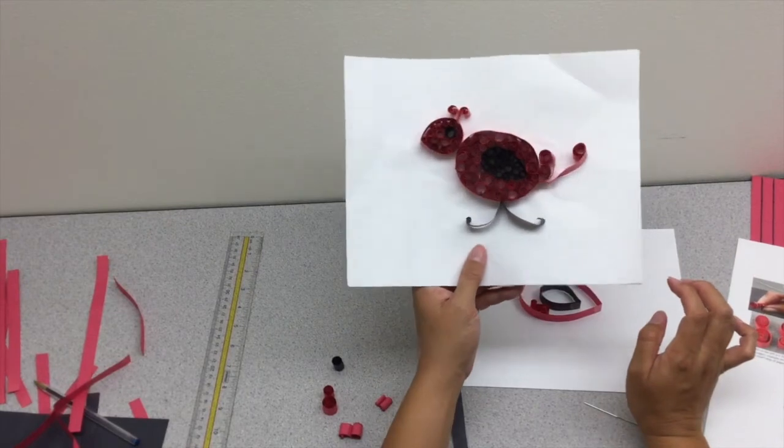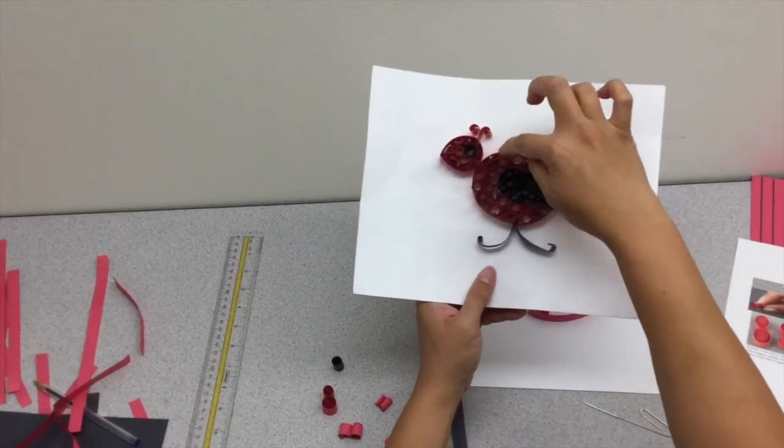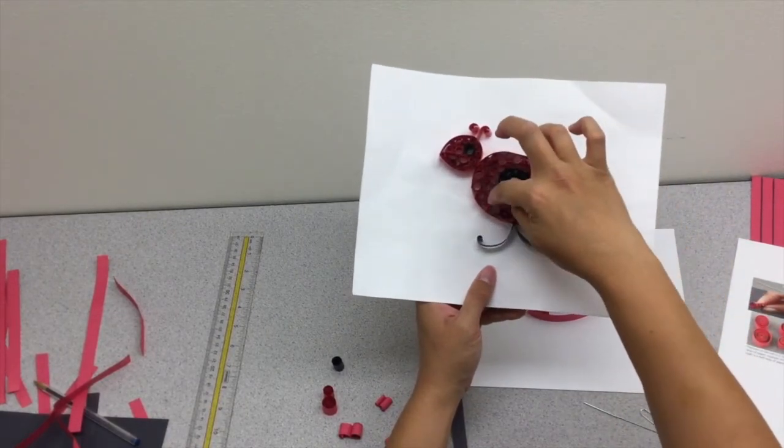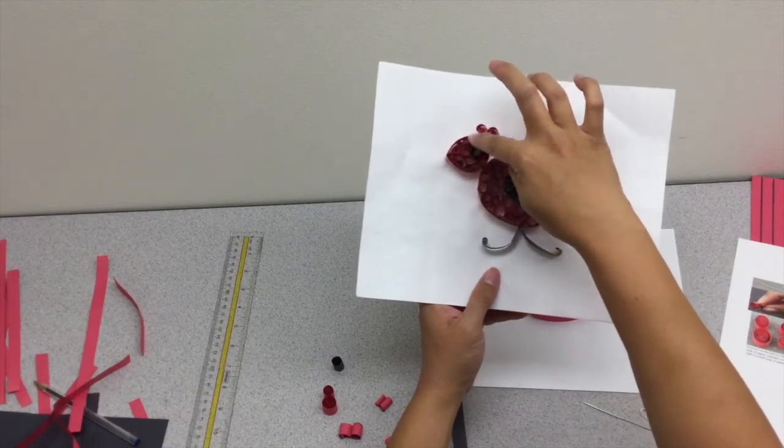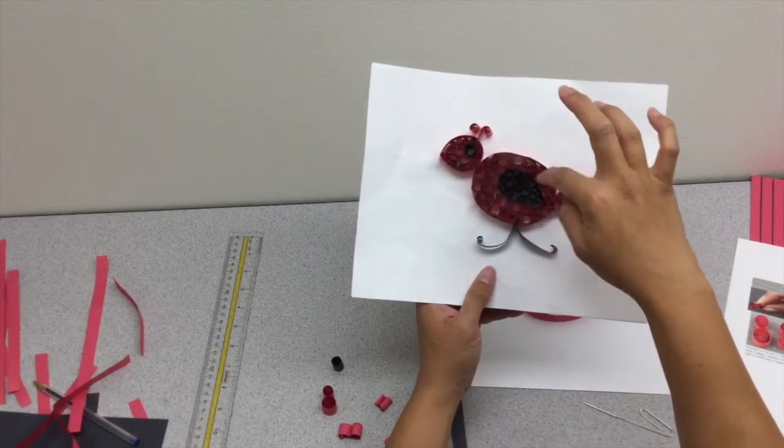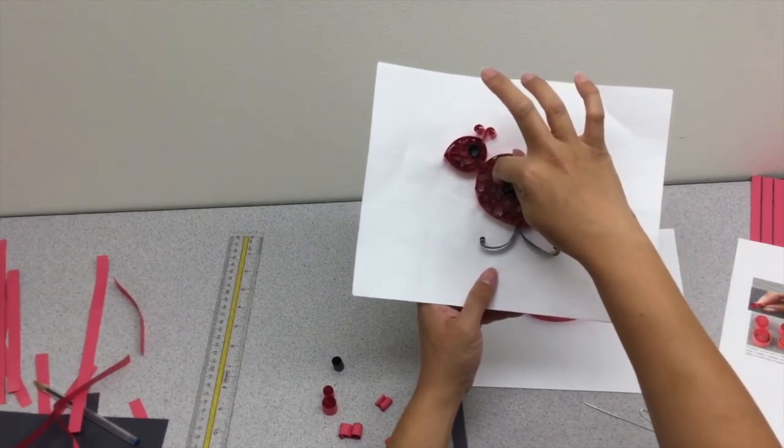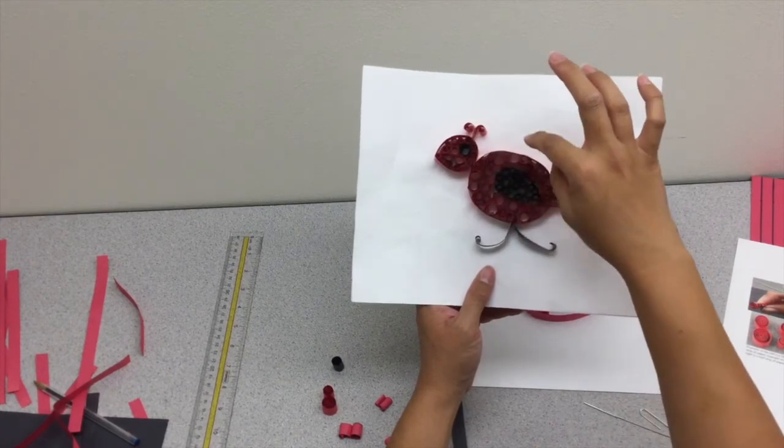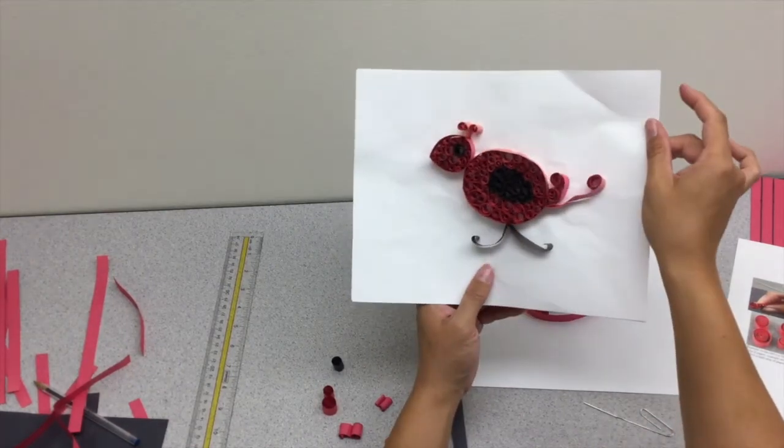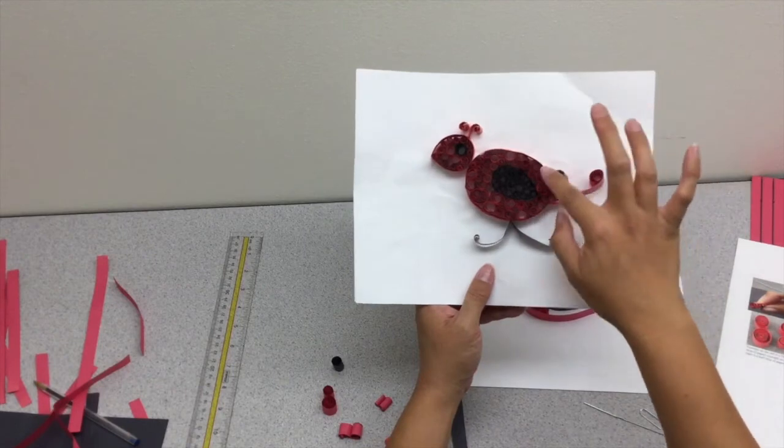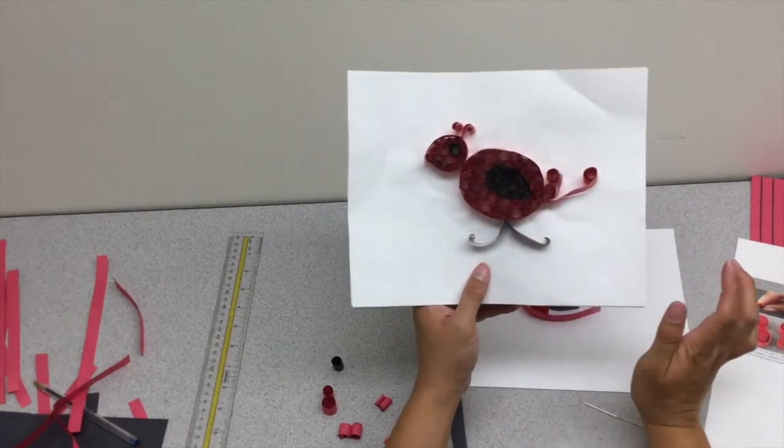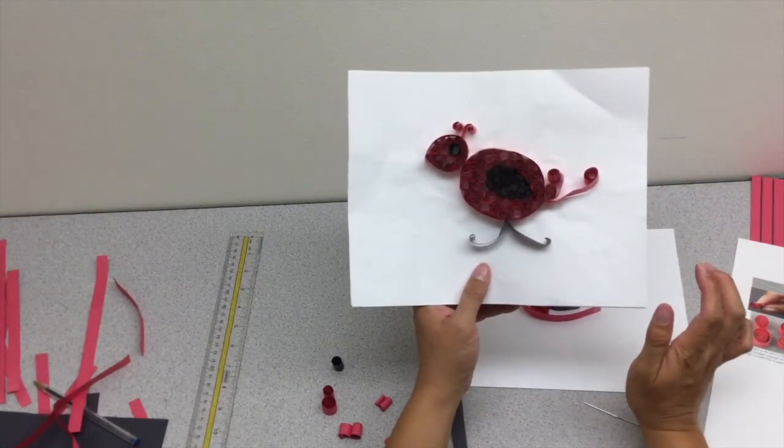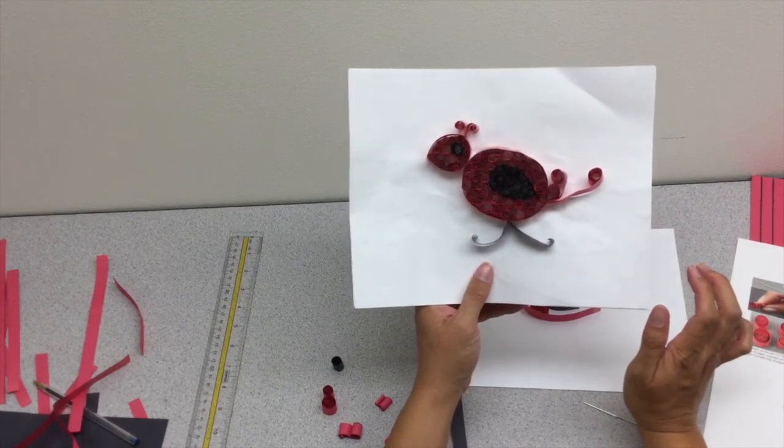Once you have it filled the way you like, take liquid glue and drop it throughout your sculpture. Make sure some glue gets to the bottom so it sticks to your background paper. Give yourself at least a day for it to dry before you hang these up.